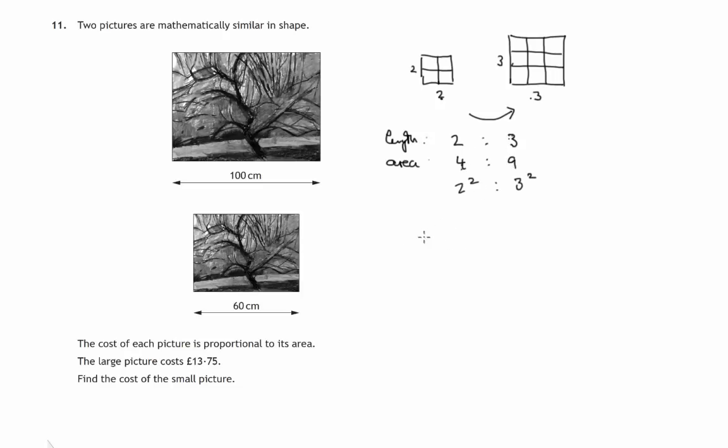In this case, this is one method we can use. I'll show you another method after this one. If we're looking at the lengths, you can see that we've got 100 on the large one to 60 on the small one. Well, that's like 10 to 6. I've divided both by 10. Indeed, it's 5 to 3. You can divide both of these by 2.